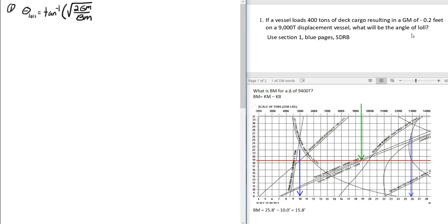In the problem, they give us the GM — it's negative 0.02 feet, and 2 is just 2. To find BM, we use the stability data reference book. We started at 9,000 tons and add 400, so our displacement is 9,400 tons. We'll assume salt water.